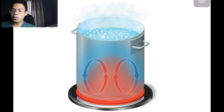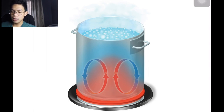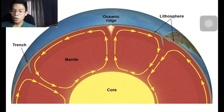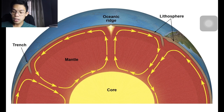This uneven temperature distribution within Earth causes a method of heat transfer called convection, where warm, less dense rock rises and cooler, more dense material sinks — similar to a pot of boiling water where water at the base is heated, becomes less dense, and rises, while cooler denser water at the surface sinks. One early model proposed that large convection cells develop in the mantle: hot rock rises from the base of the mantle, spreads the lithosphere horizontally away from the oceanic ridge, then cools and sinks back into the mantle.